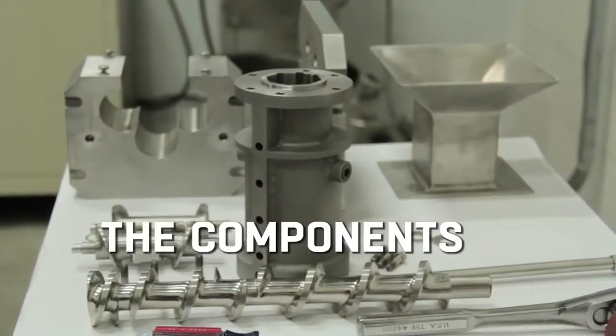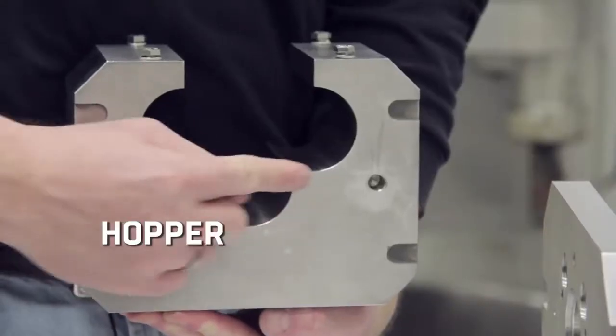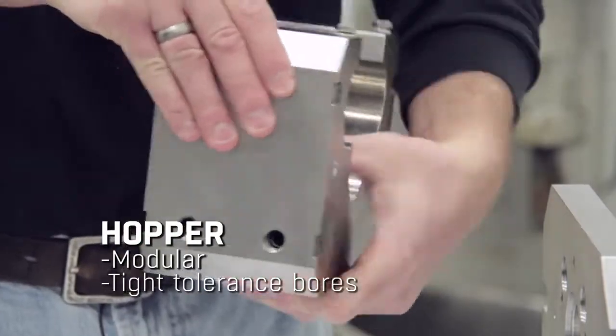This is the assembly of the TF200. This is the hopper which is doweled for location.